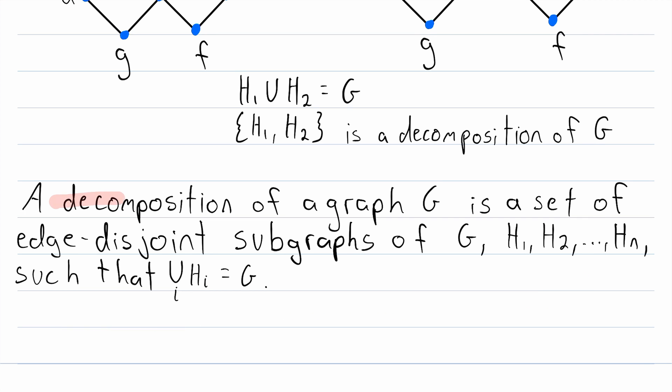So here it is. A decomposition of a graph G is a set of edge disjoint subgraphs of G that we'll call H1, H2, and so on, all the way up to the last subgraph HN, such that the union of all of those subgraphs HI is equal to the original graph G.